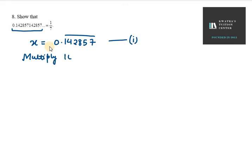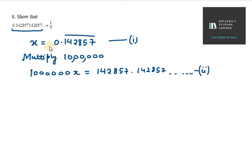So we multiply equation 1 by 1,000,000. It will be 1,000,000x equals 142857.142857 and so on. This is equation number 2.